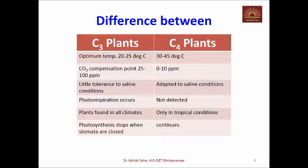The C3 cycle operates at about 20 to 25 degrees centigrade, whereas C4 plants can sustain 30 to 45 degrees centigrade, so photosynthesis continues at such high temperatures. The CO2 compensation point is 25 to 100 ppm in C3 plants, whereas it is very low — 0 to 10 ppm — in C4 plants, meaning that even when carbon dioxide concentration is very low in the atmosphere, C4 plants can survive while C3 plants cannot. Regarding salinity tolerance, C3 plants have very little tolerance whereas C4 plants are quite adapted. A great loss occurs in C3 plants due to photorespiration, which is not detected in C4 plants.